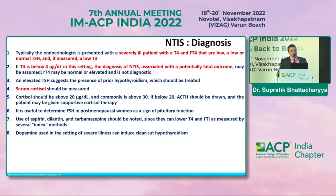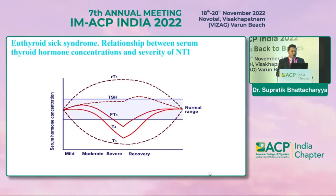If the cortisol level is more than 30, that's reassuring, but if it's below that, then ACTH should be drawn and the patient must be given supportive cortisol therapy. Additionally, FSH should be determined in postmenopausal women as a sign of pituitary function. Use of aspirin, dilantin, and carbamazepine should be noted, and dopamine used in the setting of severe illness can induce clear-cut hypothyroidism.